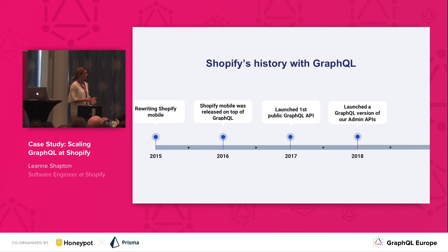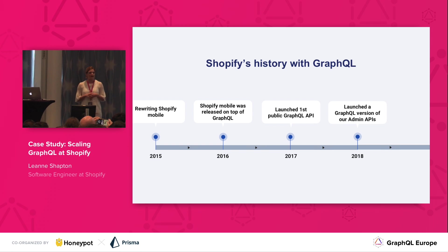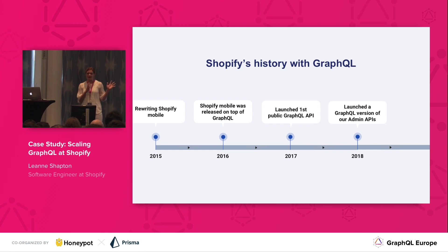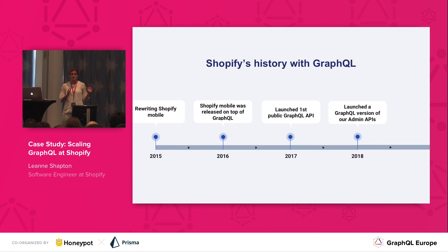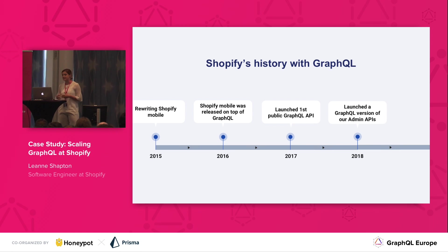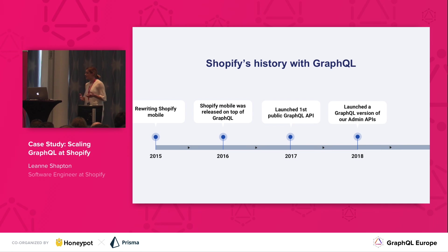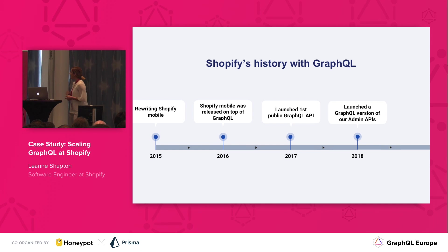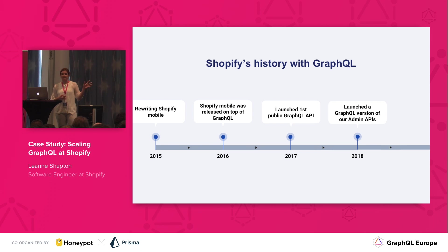GraphQL became part of our stack at Shopify around 2015 when we were looking to rewrite our mobile apps. At the time it was hard to scale mobile because you had to write all of your features twice in two different languages by two different teams, each learning the domain separately. So GraphQL helped us to move a lot of that logic onto the server. A year later we were able to release our mobile app rewritten on top of GraphQL, and then in 2017 was the first time we used GraphQL publicly with our release of our storefront GraphQL API.